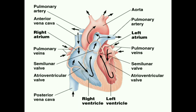Next we will discuss the valves of the heart. First is the tricuspid valve, which is located between the right atrium and right ventricle. In the left atrium and left ventricle there is the bicuspid valve. Next is the semilunar valve, which includes the pulmonary valve and the aortic valve. They are present where the artery leaves the heart.